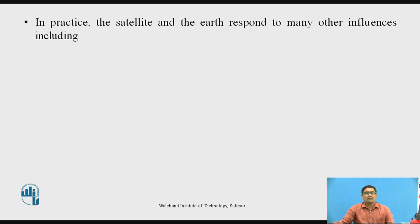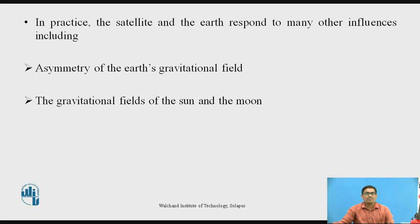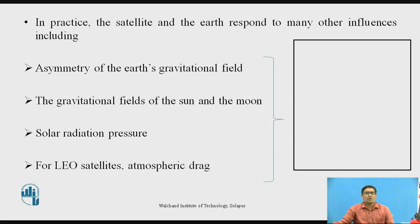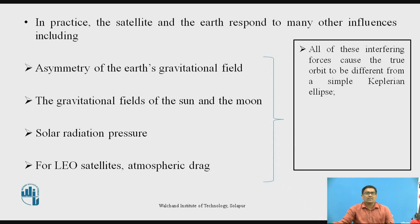In practice, the satellite and the earth respond to many other influences, including: first, asymmetry of the earth's gravitational field; second, the gravitational fields of the sun and the moon; third, solar radiation pressure; and fourth, for LEO satellites, the atmospheric drag. All of these interfering forces cause the true orbit to be different from a simple Keplerian ellipse.